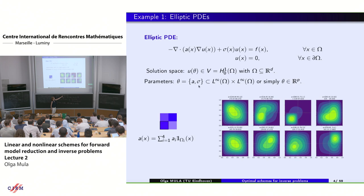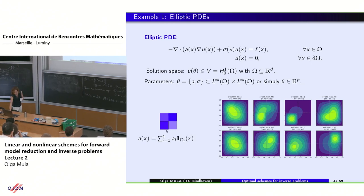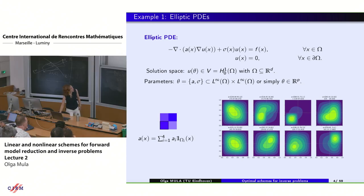At the beginning of the lecture, A was theta, taken constant for simplicity. In general it can be a field A of x in space, and the same for sigma. We assume these fields lie in compact sets of some ambient space, for example in L-infinity. Here is an example of solutions when, in a 2D square, A of x is piecewise constant in four regions, and we vary the values inside each region as our parameters. Varying them generates different solutions that we will play with in Agustin's computer lab later.